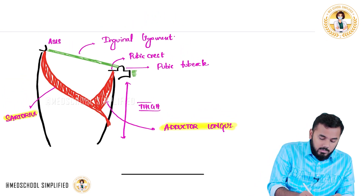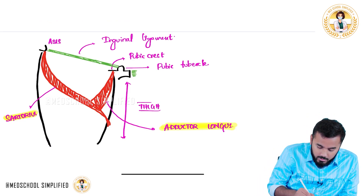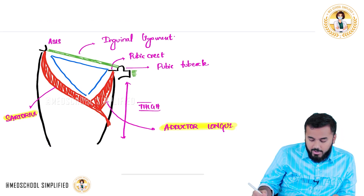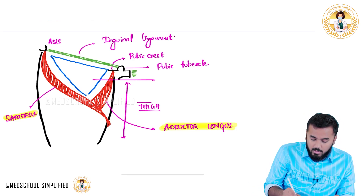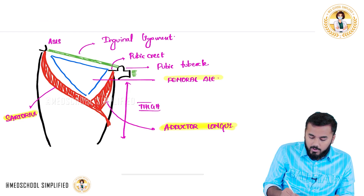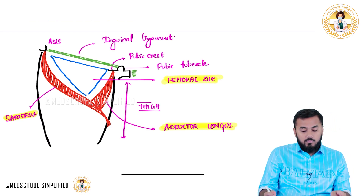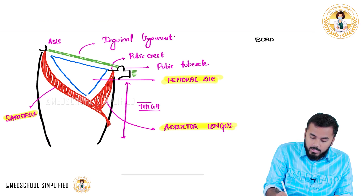You can see that a triangle has been formed between these muscles. This triangle is called your femoral triangle. Now, what are the borders of the femoral triangle?